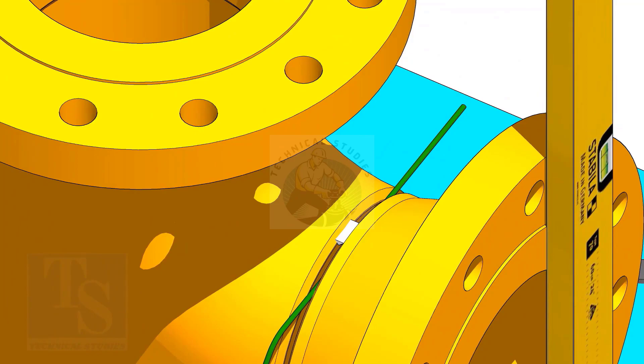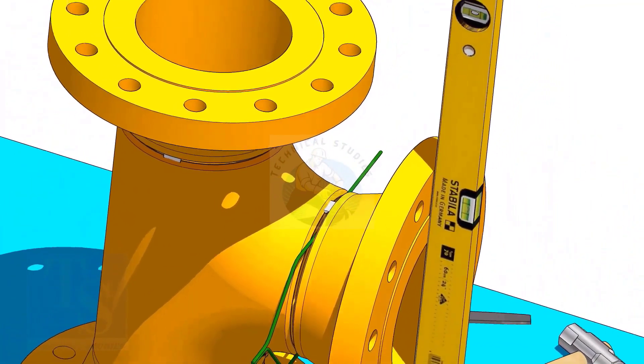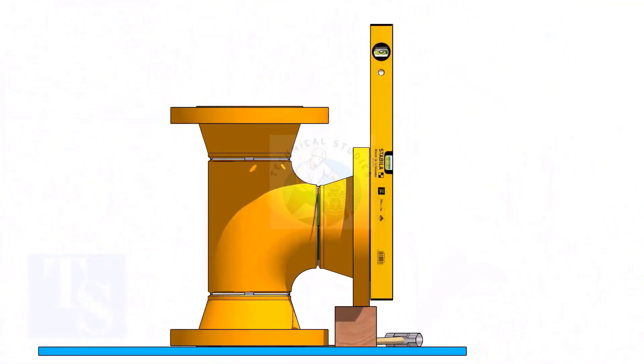Tack weld on the top side. Correct the flange vertically, and tack weld below.